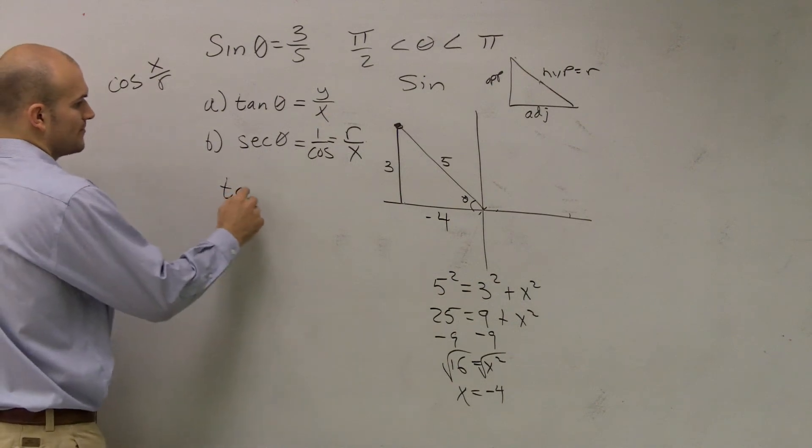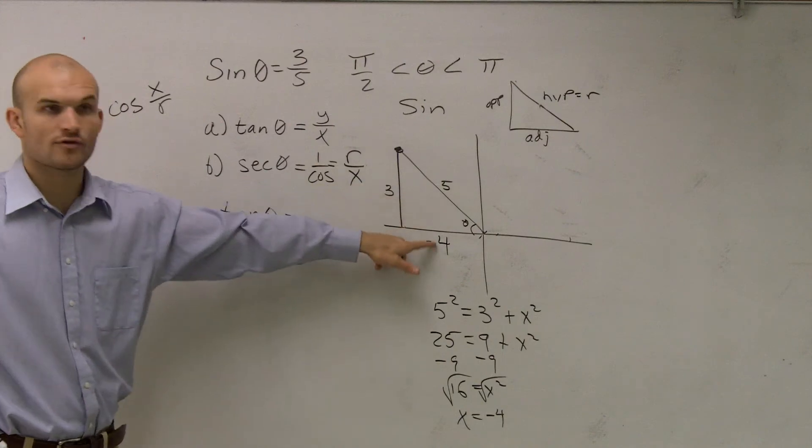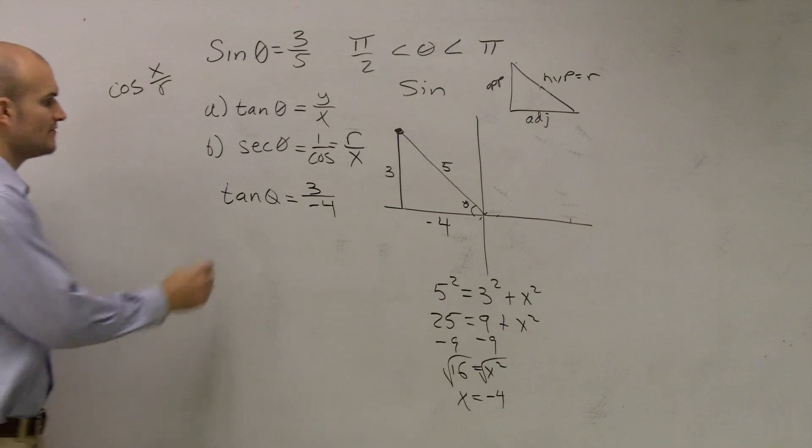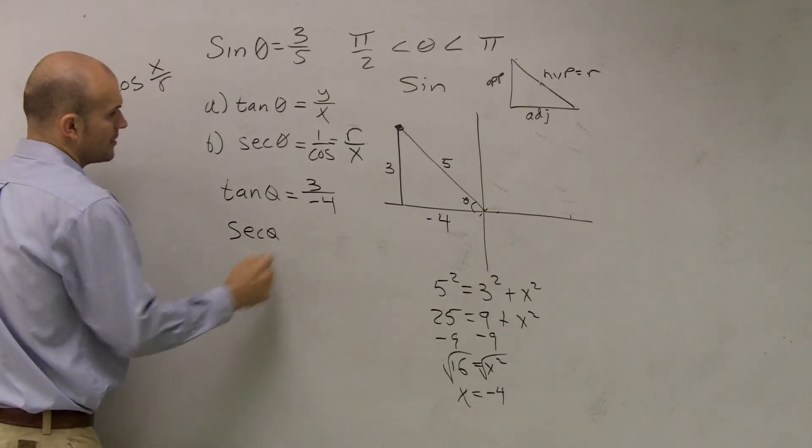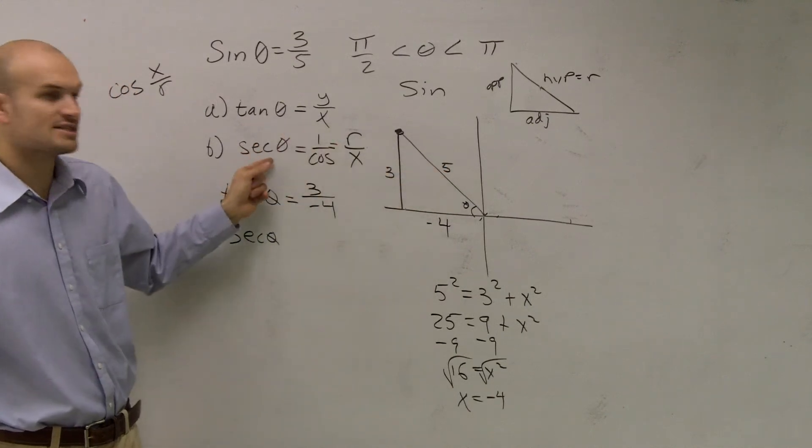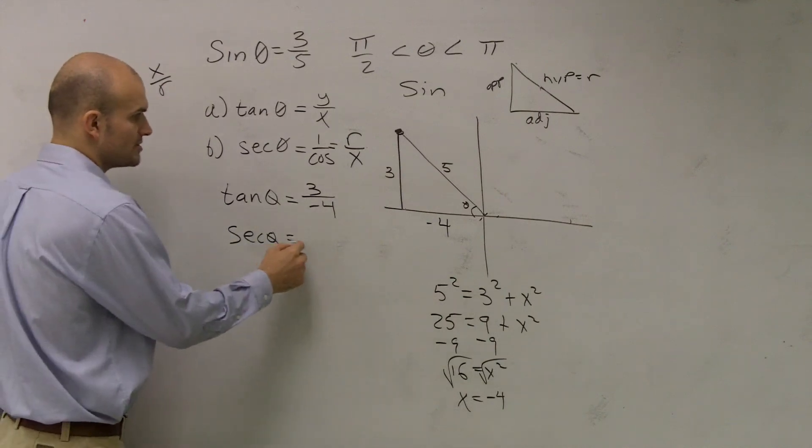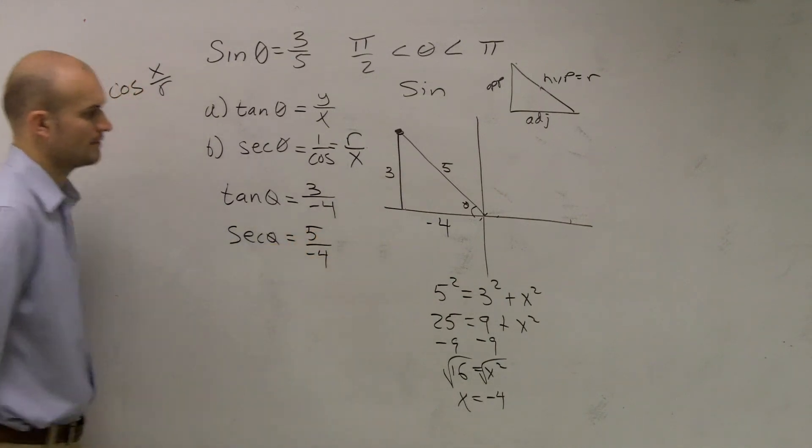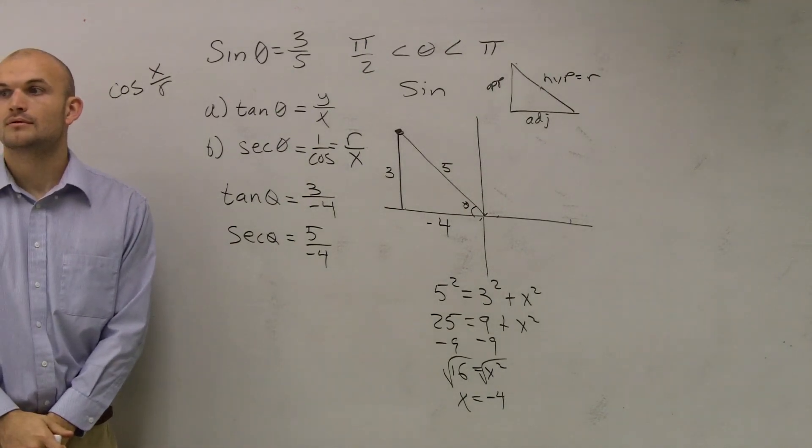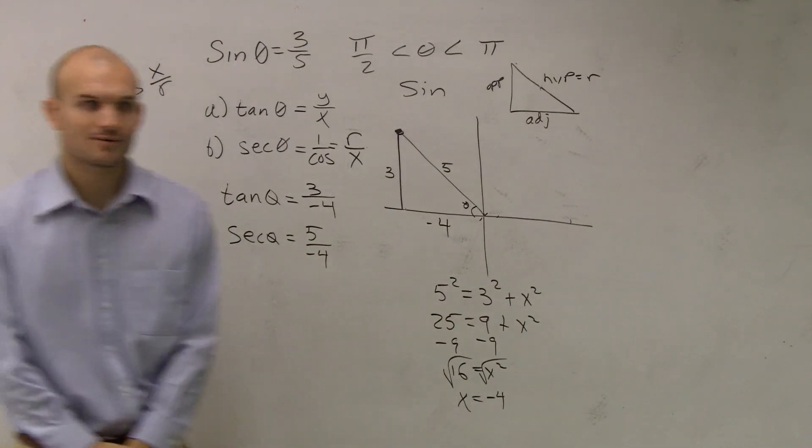So now define the tangent of theta. My tangent of theta is my y, which is 3, over my x, so it would be 3 over -4. Define my secant of theta. Remember, cosine would be my x over my radius, but we're talking about the reciprocal of cosine, which is now going to be my hypotenuse over my adjacent. So that's just going to be 5 over -4. Yeah, but when you go to practice it goes back quicker. Any questions on this?